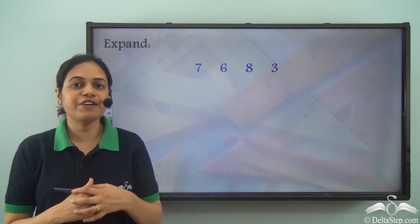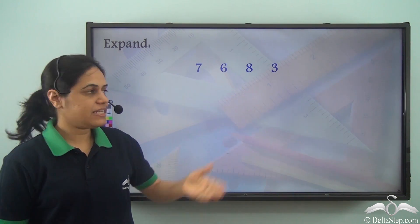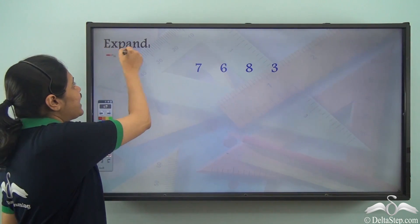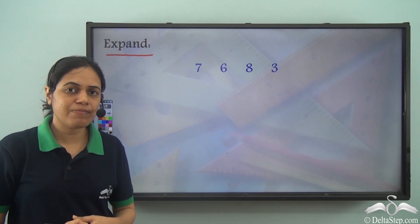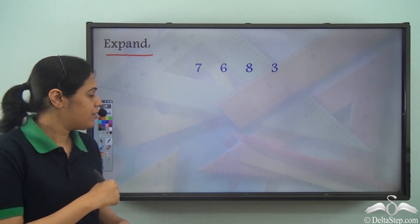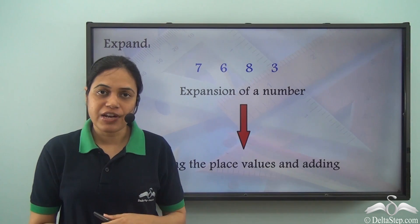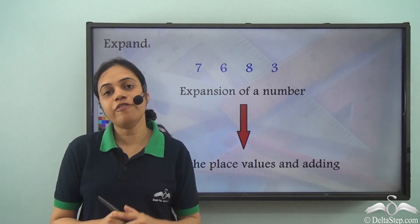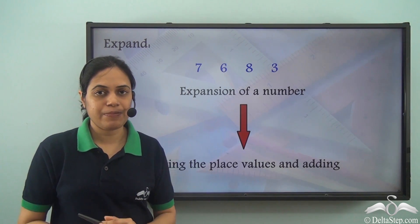We have learnt the different four digit numbers. This is a four digit number and we need to expand this number. How do I expand this number, or what do I mean by expanding this number? Well, expansion of a number means writing the place values of the different digits of the number and then adding them.